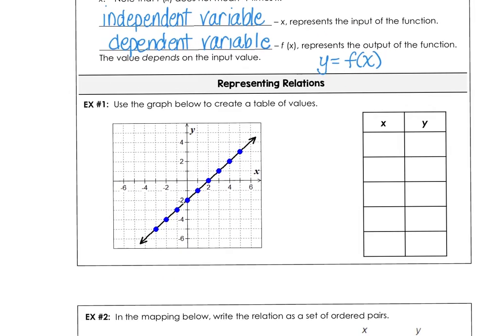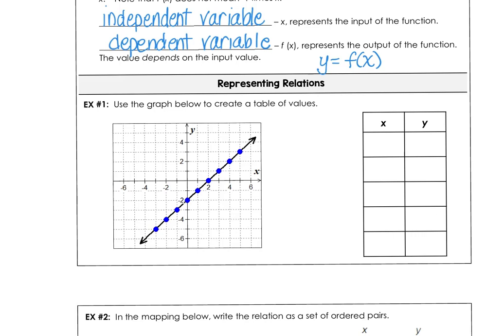We're going to use the graph below to create a table of values. And I'm just going to start at negative 2. And I see that when x is negative 2, y is negative 4. And then when x is negative 1, y is negative 3. And 0, negative 2 is called our y-intercept. And 1, negative 1. And then 2, 0 would be the solution, or the root, or the 0 of our function.